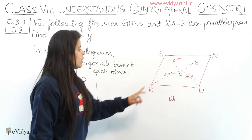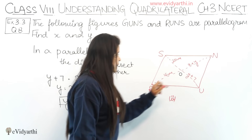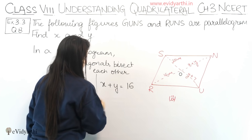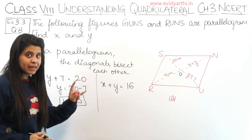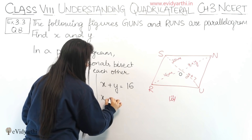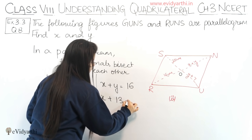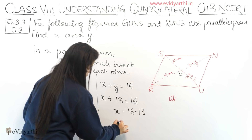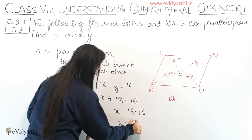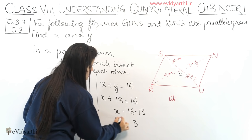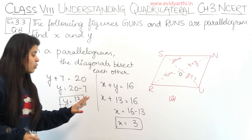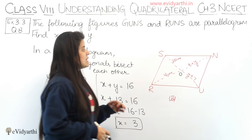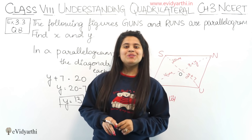Now we have Y's value, so for the other equation: X plus Y equals 16, so X plus Y equals 16 cm. We can substitute Y equals 13 here. So X plus 13 equals 16. Therefore X equals 16 minus 13, which gives X equals 3. So X equals 3 and Y equals 13 cm. This was the second part and the last part of this question. Now let's come to the next question.